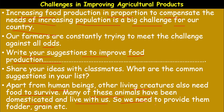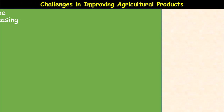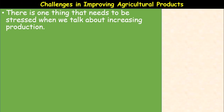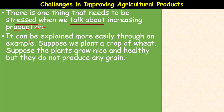Many animals have been domesticated and live with us, like cow, goat, sheep, etc. We need to provide them fodder, grains, and food. It is our prime responsibility. There is one thing that needs to be stressed when we talk about increasing production — it can be explained more easily through an example. Suppose we plant a crop of wheat.